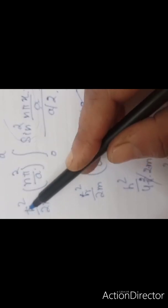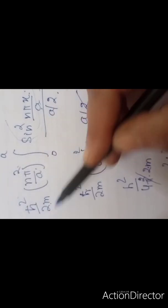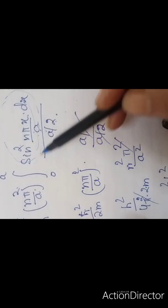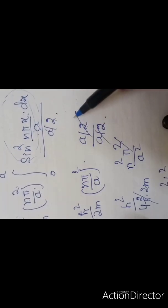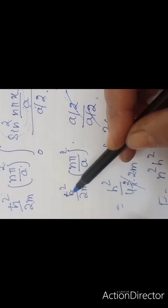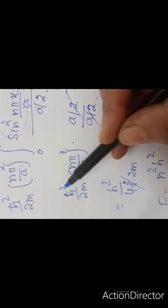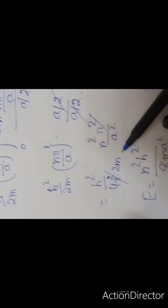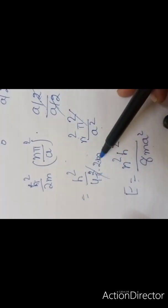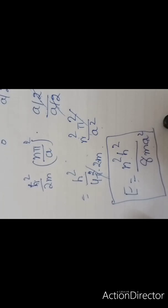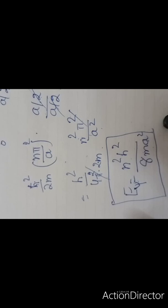Taking h-bar squared upon 2m and (n*pi/a) squared common, what remains inside is the integral of sine-squared(n*pi*x/a) dx divided by a/2. Integrating sine-squared gives a/2, so the a/2 terms cancel. Substituting h-bar equals h/(2*pi), so h-bar squared equals h-squared/(4*pi-squared), and simplifying gives the energy as n-squared*h-squared / (8*m*a-squared).